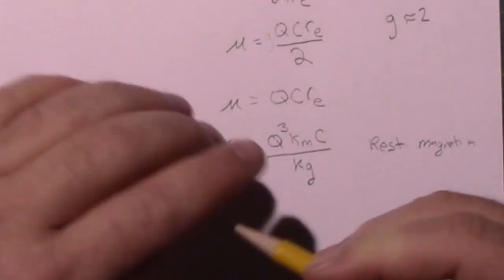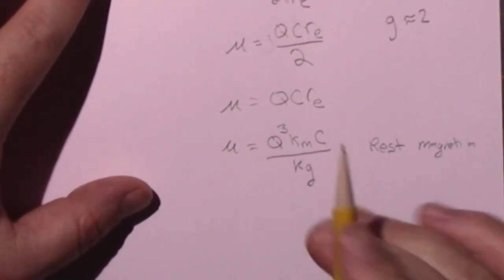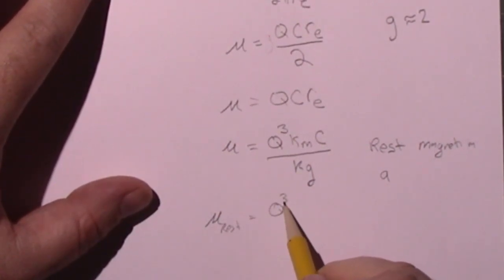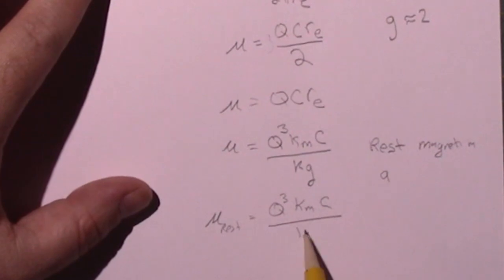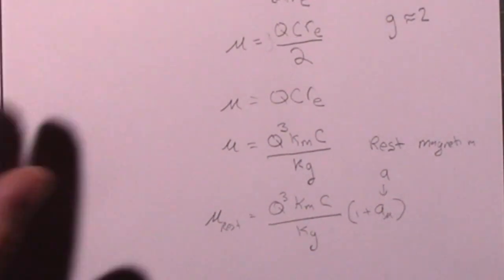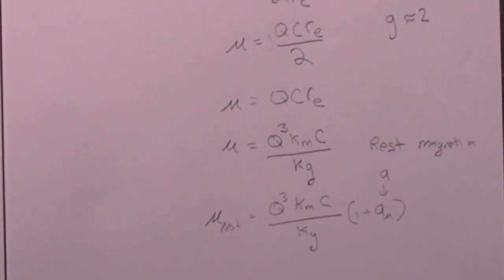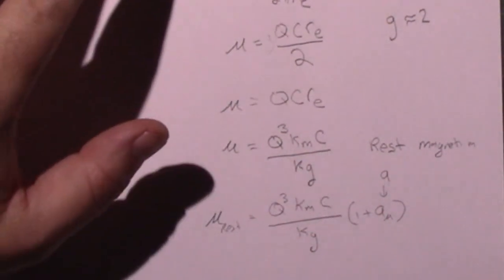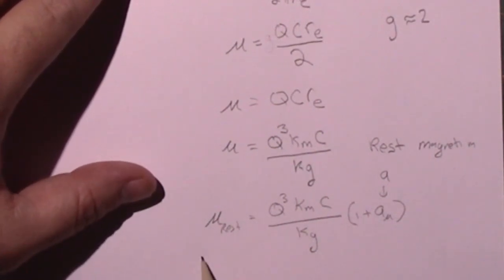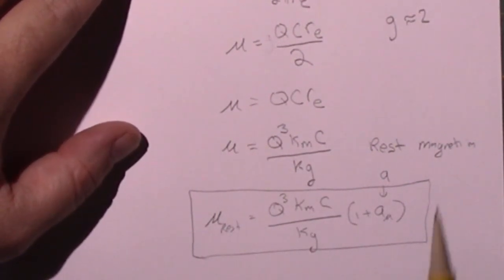We have to compensate by the anomaly. They publish values for the anomaly. So mu rest equals q cubed k_m c over the kilograms times one plus the a_mu. This is the anomaly. Every particle has published anomaly factors. It's just a fraction but it makes the answers a little bit like theirs. This is now the rest magnetic moment. What do I mean by that?